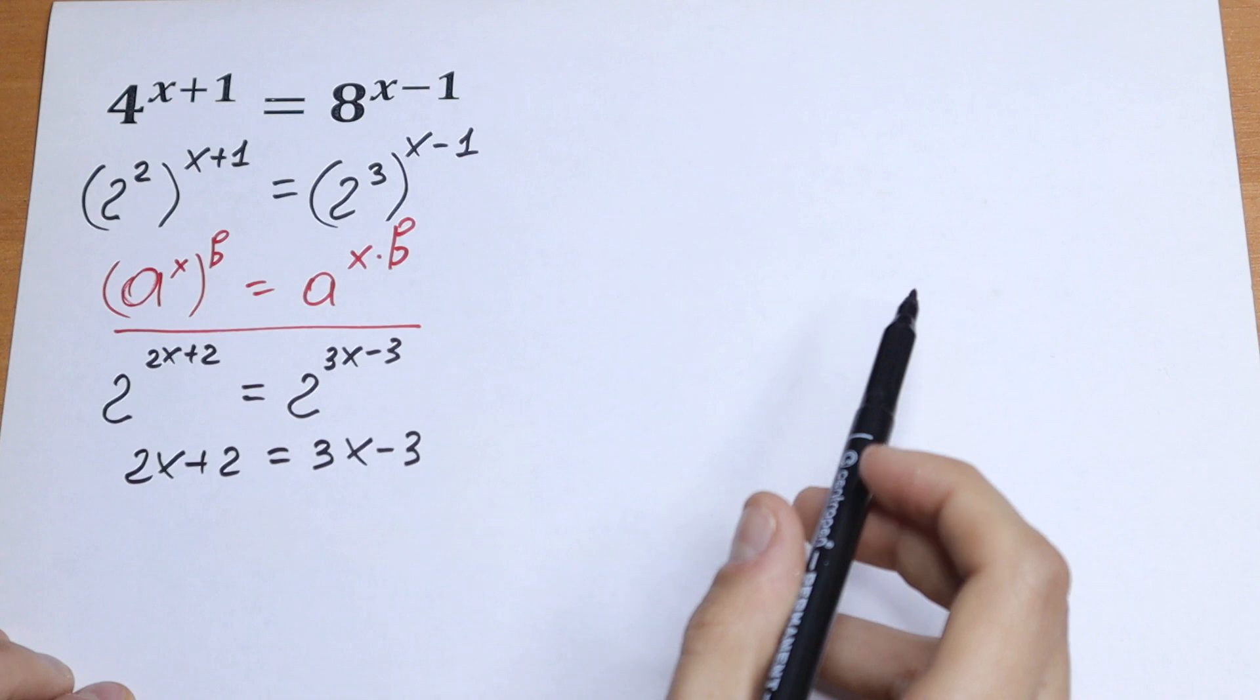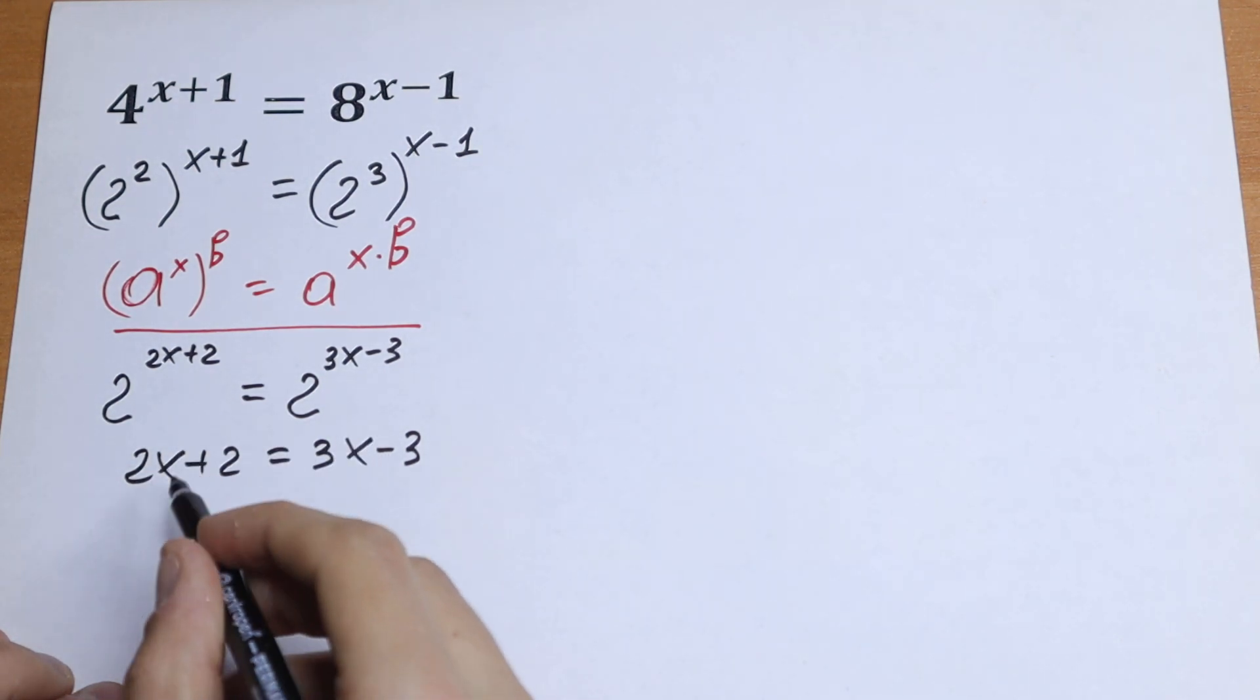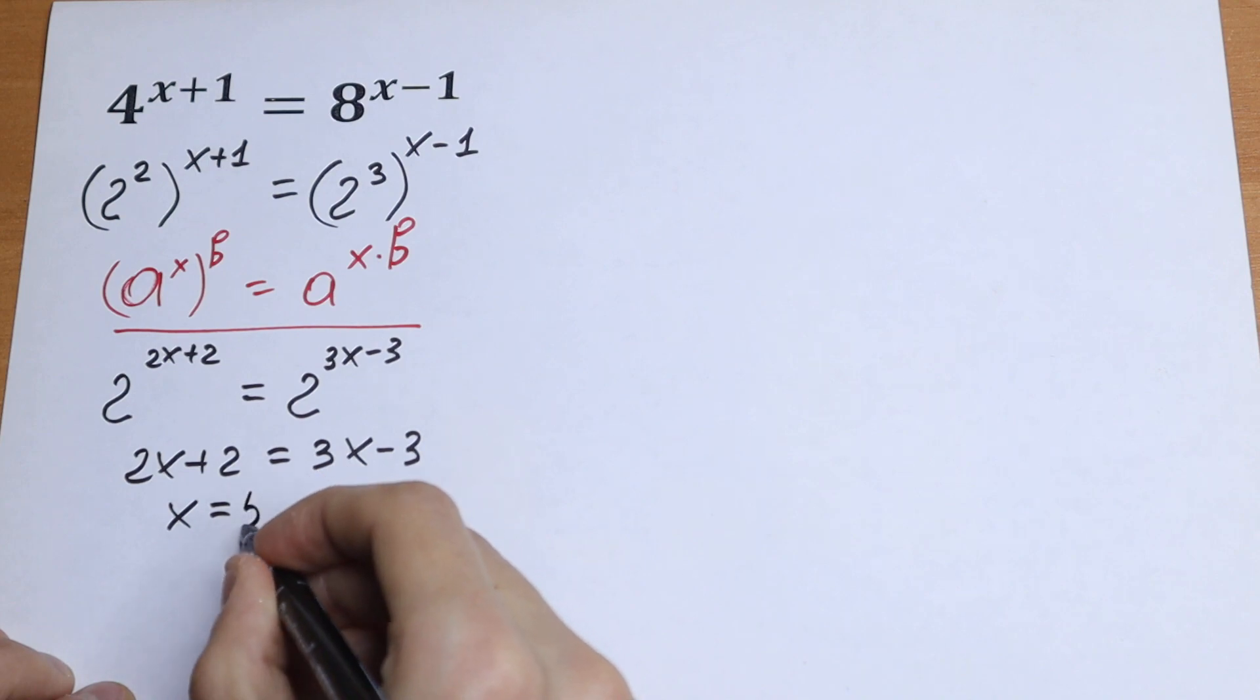Let's try to solve it. We can bring these 2x on the right. We will have only x. And bring these 3 on the left with this plus sign. So we will have x equals 5.